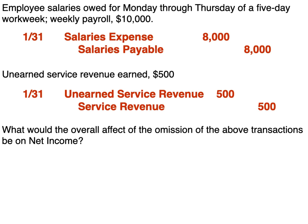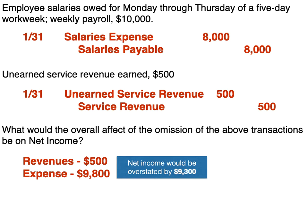What would the overall effect of the omission of the above transactions be on net income? Net income is computed as revenues minus expenses. We have one revenue of $500 — if we didn't record that, it would reduce net income. We also have four expenses: salaries expense, depreciation expense, interest expense, and rent expense, which all added up to $9,800. So if we did not record these adjusting entries, net income would be overstated by $9,300.